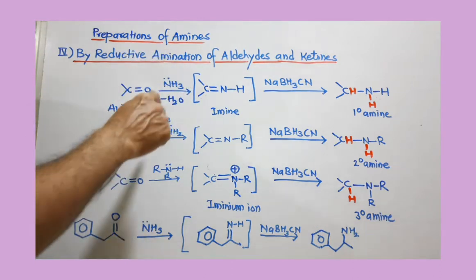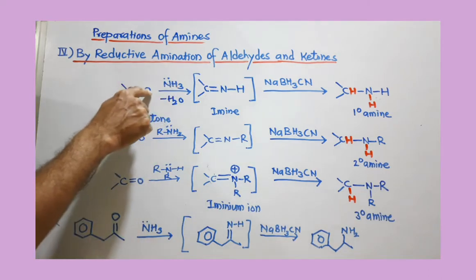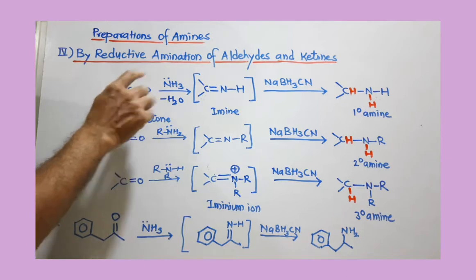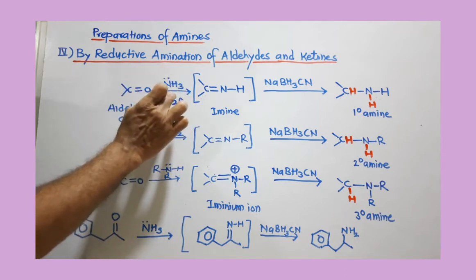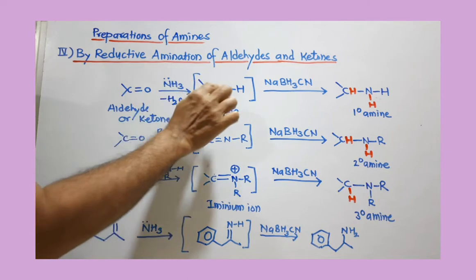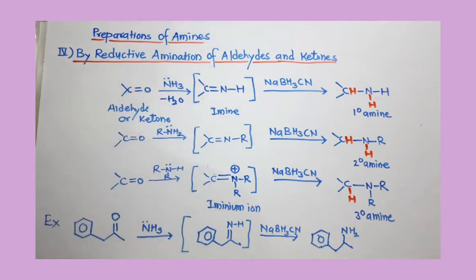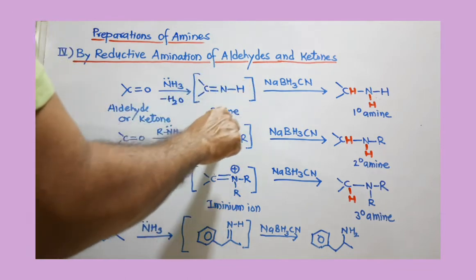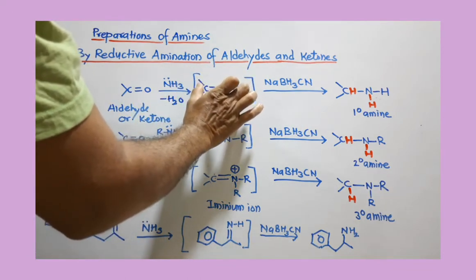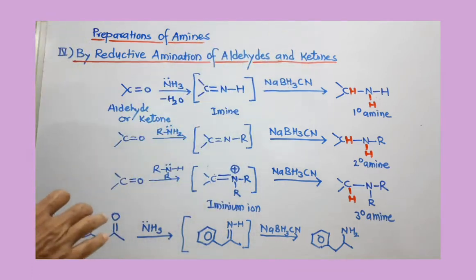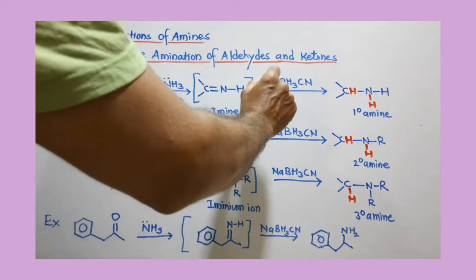When you are using ammonia for this synthesis, you take two hydrogens from ammonia and join with the oxygen. This is a condensation reaction where a water molecule is removed, and the NH is taking the position of the oxygen. The resulting compound is called an imine, which we cannot isolate.